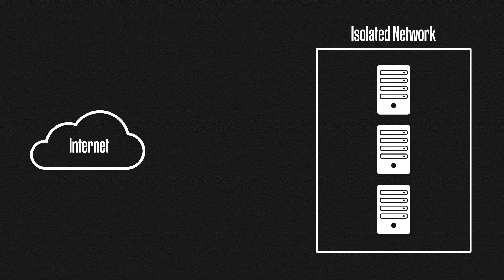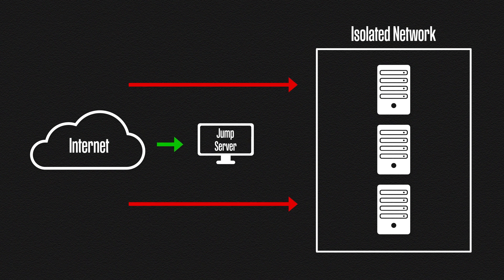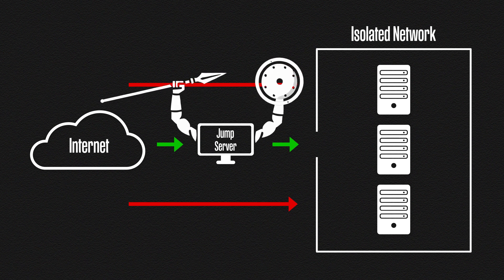Instead of exposing each device directly to the internet, we can add another host called a jump server. This host and only this host will be directly accessible to the internet. Public access to all other devices is blocked. This server will also be able to connect to our internal devices as well. This jump server is our narrow pathway, filtering all connections through this one host. By having only one publicly facing host, we reduce the attack surface and force the attackers to use this one route. And of course, this host will be locked down with all of our security.